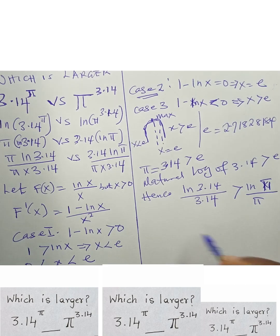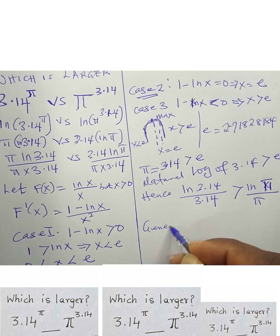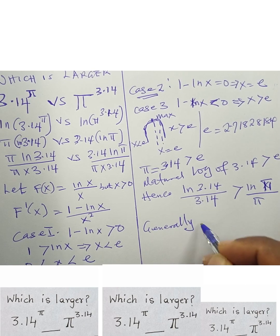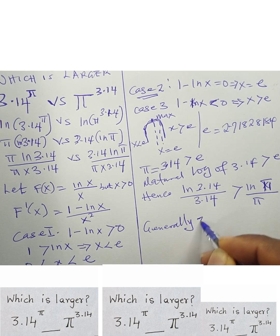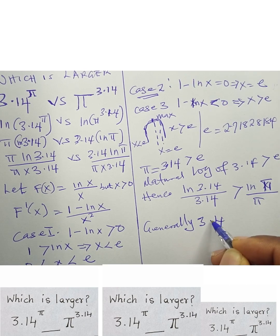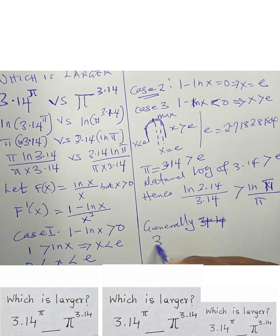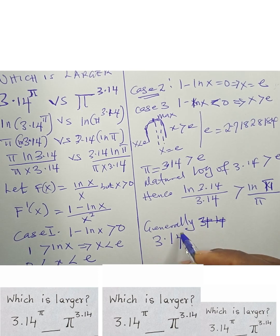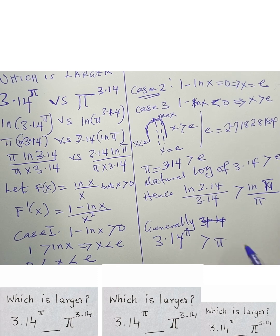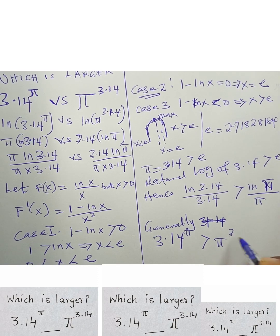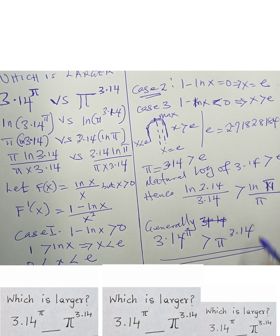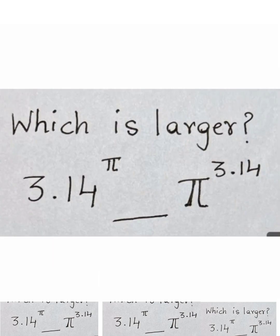We can now conclude that 3.14 raised to the power of pi is greater than pi raised to the power of 3.14. Thank you for watching, and do remember to subscribe to my YouTube channel. Bye-bye.